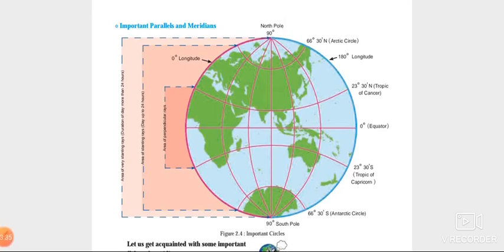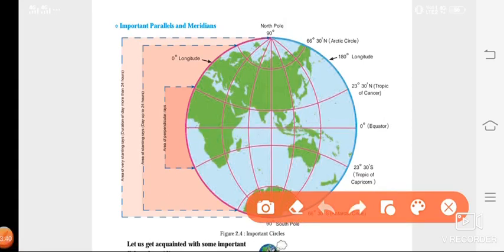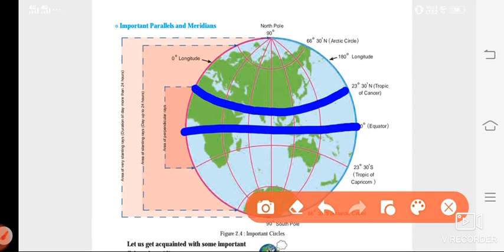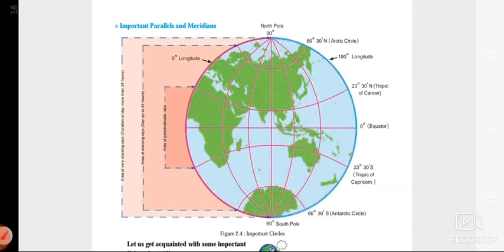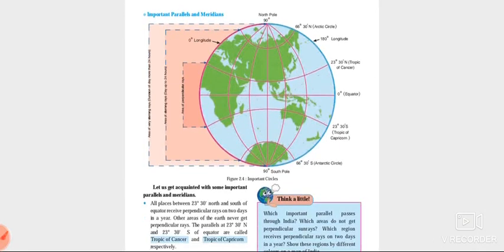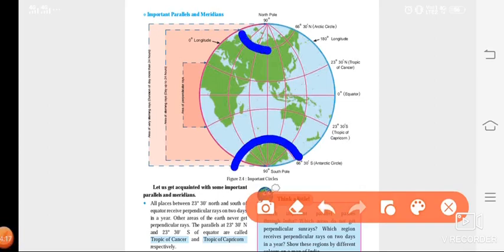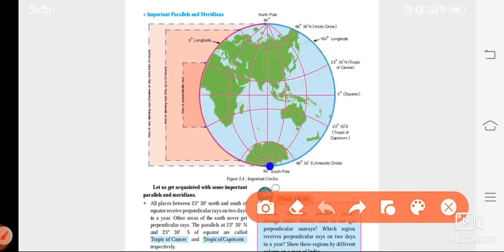We will recall the important parallels. The zero degree parallel is one of the important parallels, called the equator. Next we have two parallels at 23 degrees 30 minutes south and 23 degrees 30 minutes north — the northern one is the Tropic of Cancer and the southern one is the Tropic of Capricorn. Then at 66 degrees 30 minutes north and 66 degrees 30 minutes south we have the Arctic Circle and the Antarctic Circle. The next important parallels are at the poles: 90 degrees north and 90 degrees south.